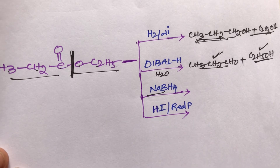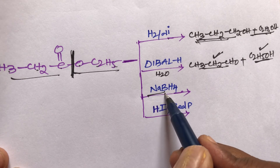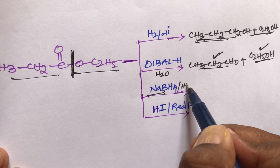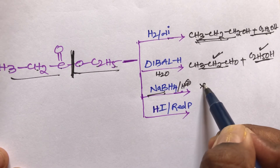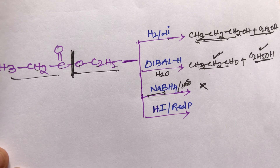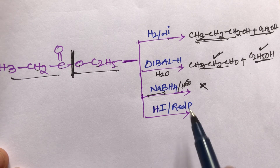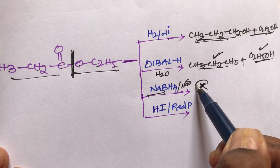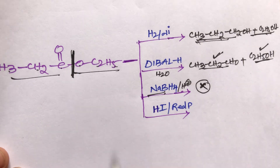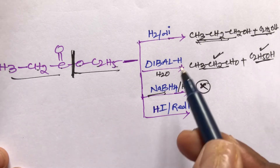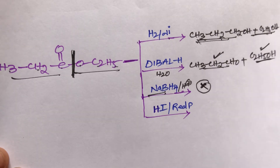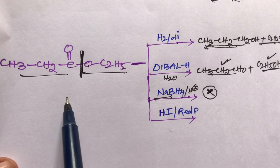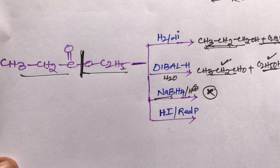When the ester reacts with sodium borohydride — sodium borohydride is a weak reducer, so it cannot reduce the ester group. There is no change. Sodium borohydride cannot reduce esters.